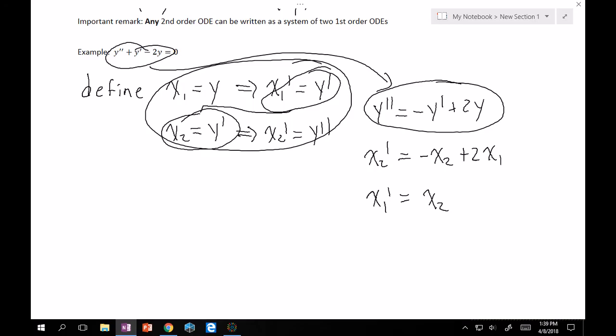Now, if we write this a little bit more cleanly or more organized, you can write this as x1 prime is equal to 0x1 plus x2. And then x2 prime is equal to 2x1 minus x2. And then from here, it's pretty obvious that you can translate this into a matrix.